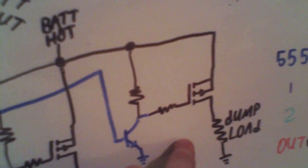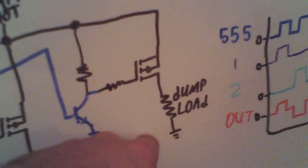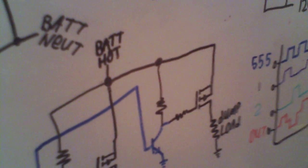The float one will just be connected to the dump load because whenever it's in float mode, it'll turn on an auxiliary dump load.